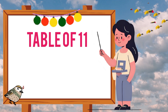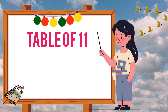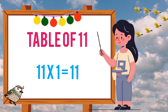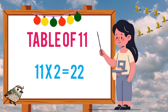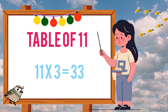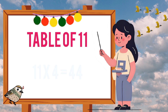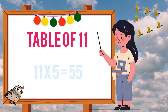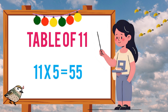Let's learn table of eleven. Eleven ones are eleven. Eleven twos are twenty-two. Eleven threes are thirty-three. Eleven fours are forty-four. Eleven fives are fifty-five.